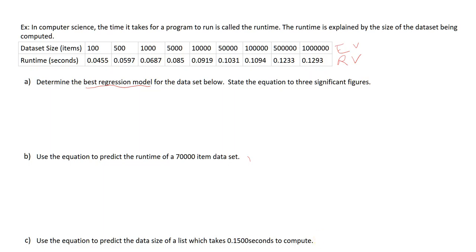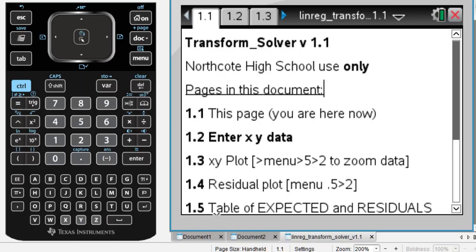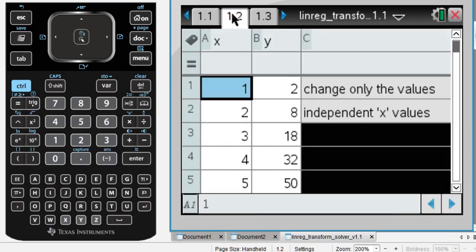So, we're going to start by opening up our transform solver. So, it looks something like this. It gives us our little intro page with what is on each of our pages. We're going to start with page 1.2. So, here we need to enter all of our data. I'm just going to use a little bit of computer magic, but you'll have to go and manually input each of the values.